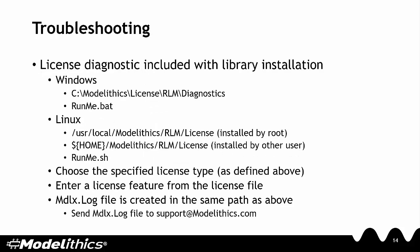It may be necessary to troubleshoot license issues. A license diagnostic is included with the library installation. If you're using Windows, you can find this in the C Modellytics license RLM diagnostics folder — the diagnostic script file is called runme.bat. If you're using Linux, you can find the license diagnostic in the appropriate folder, where the script file is called runme.sh. Running the diagnostic script will prompt you to choose the specified license type, then enter a license feature from the license file. An mdlx.log file will then be created, which you can email to support at modellytics.com.